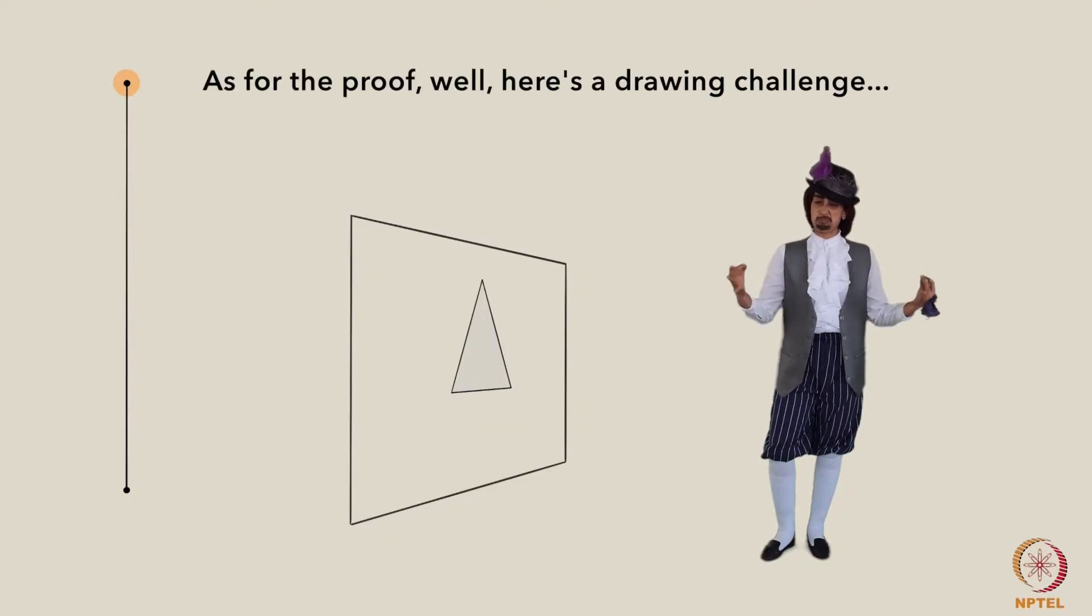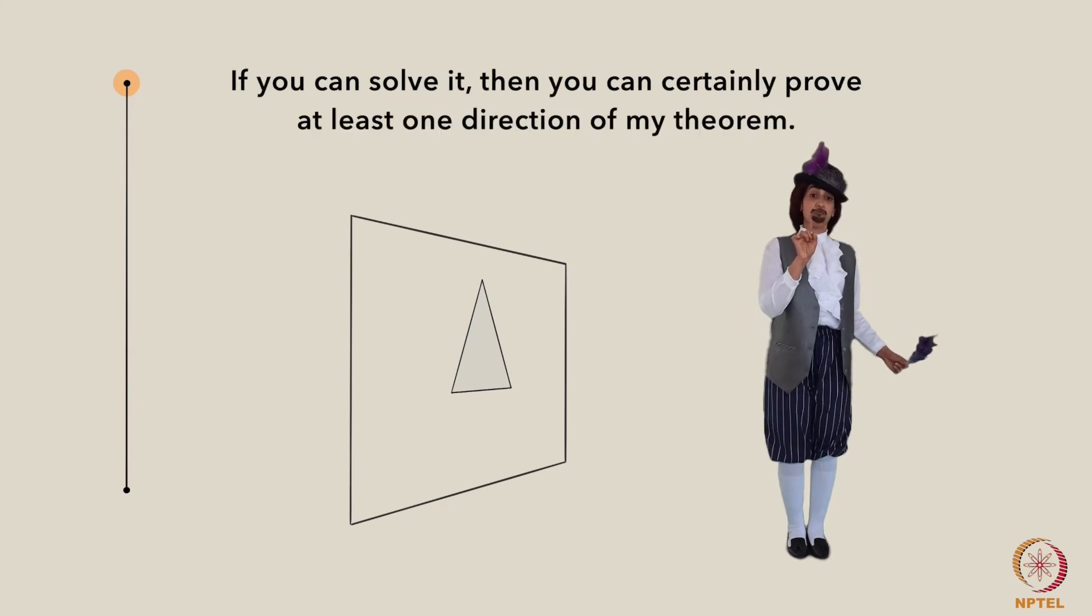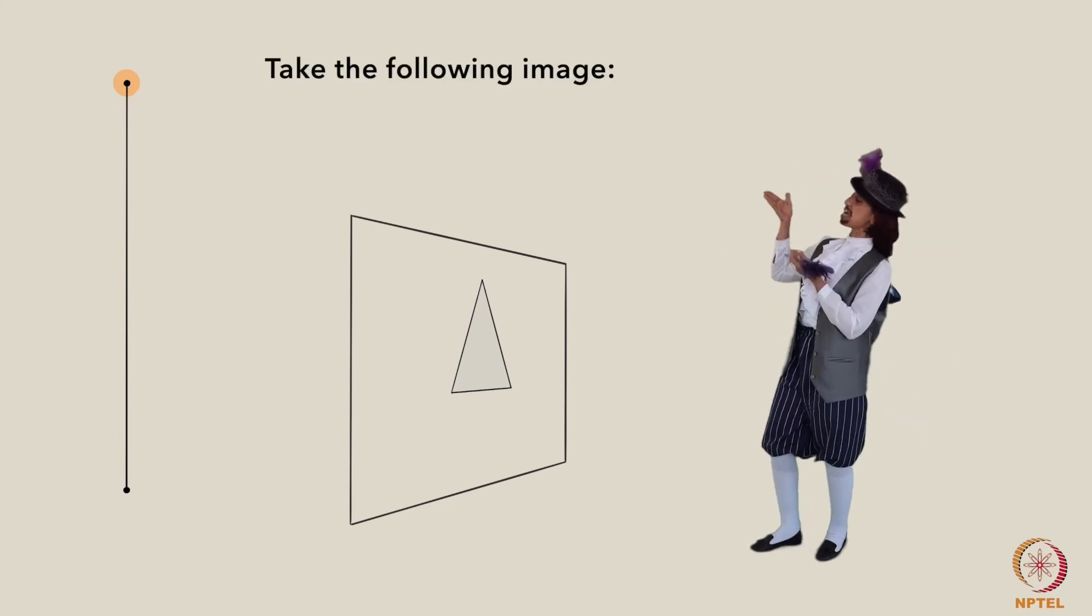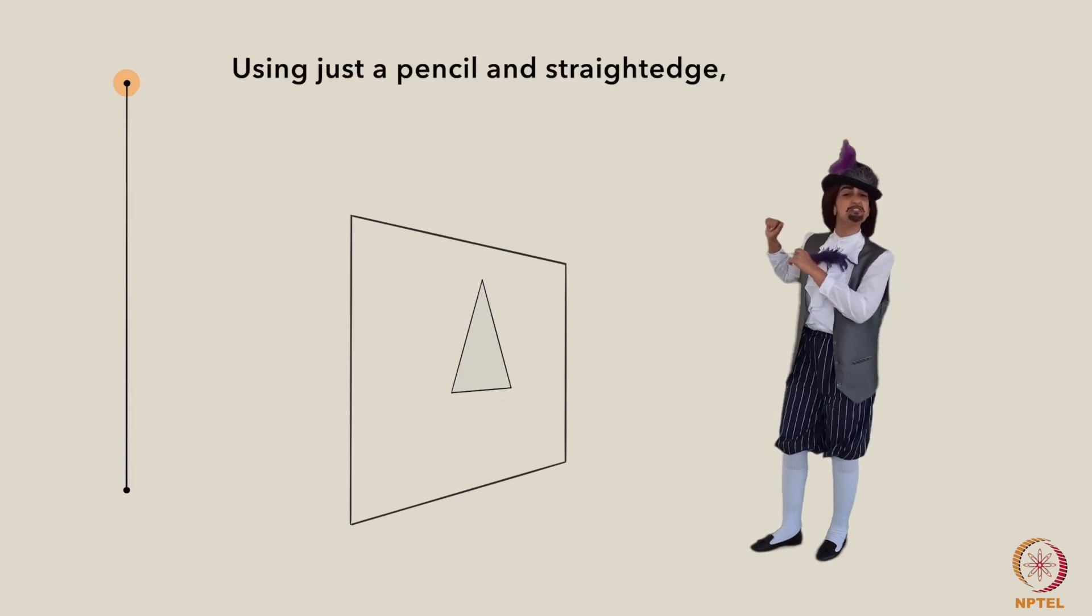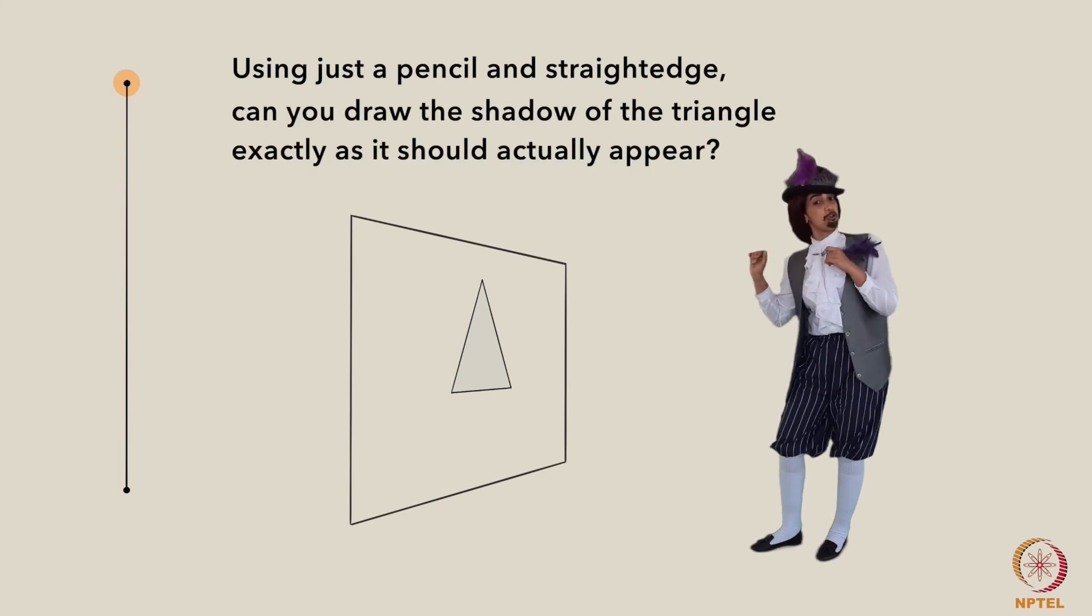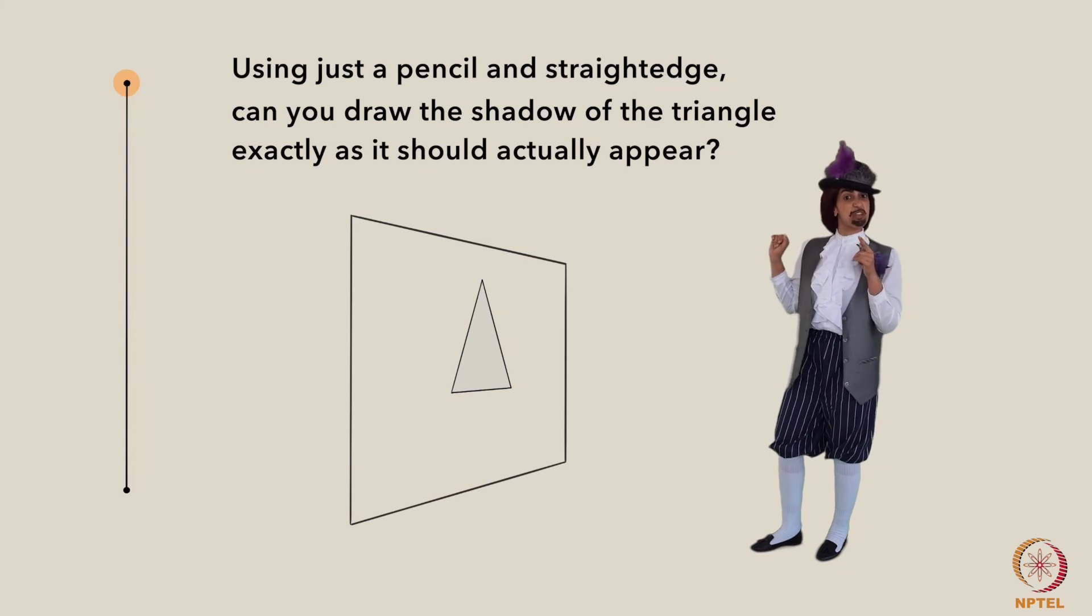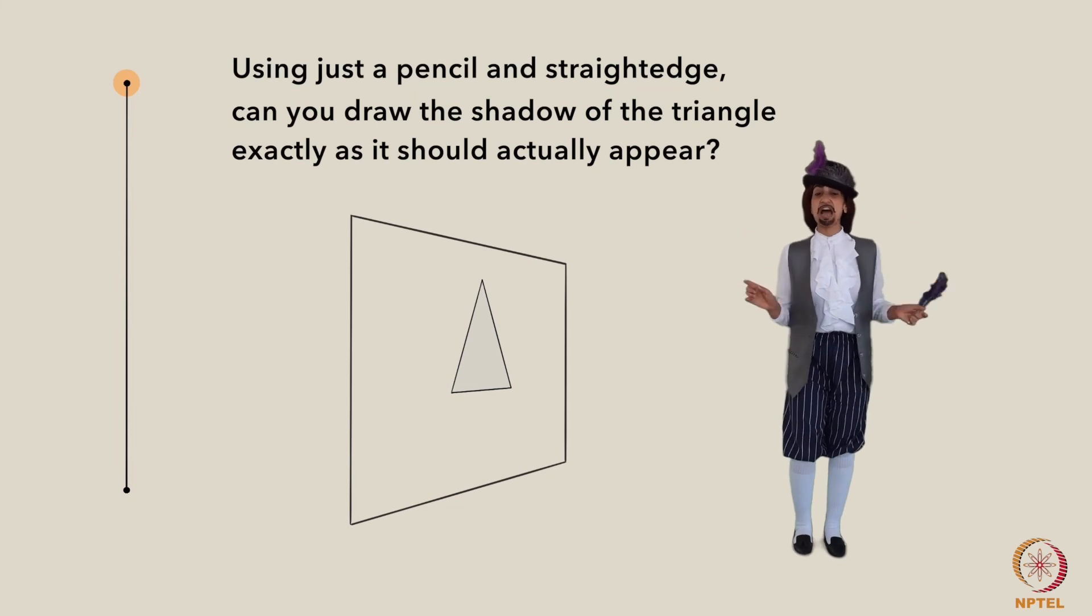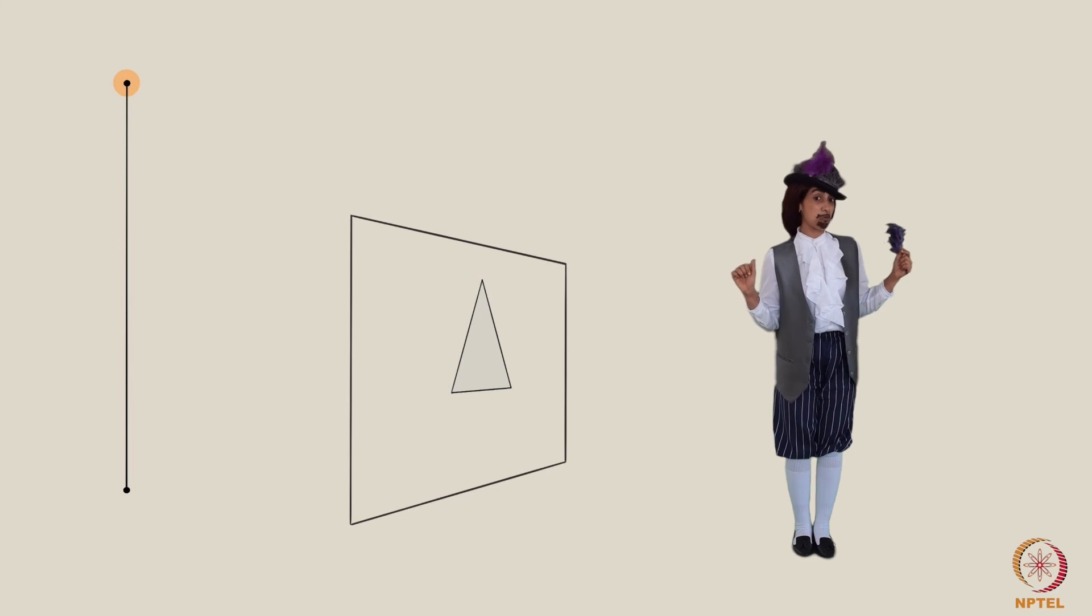As for the proof, well, here's a drawing challenge. If you can solve it, then you can certainly prove at least one direction of my theorem. Take the following image. Now, using just a pencil and a straight edge, can you draw the shadow of the triangle exactly as it should actually appear? If you can manage this, you can certainly prove at least one direction of my theorem. Well, good luck and bonne chance.